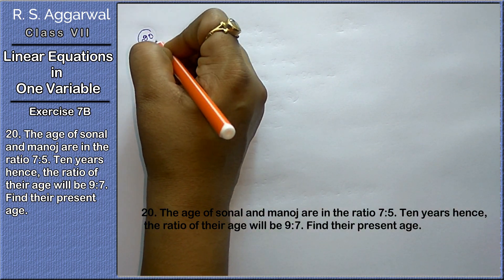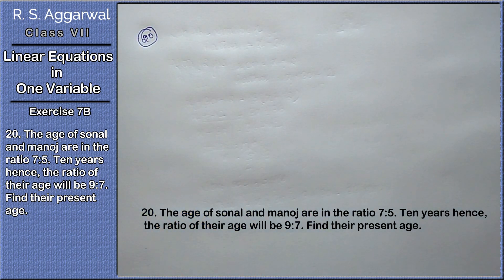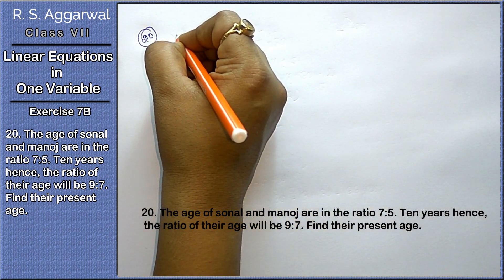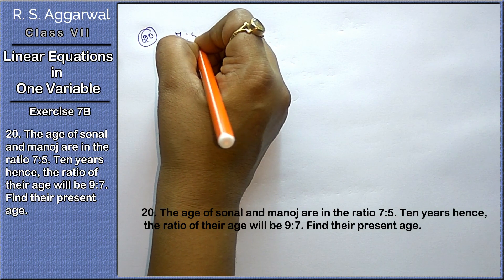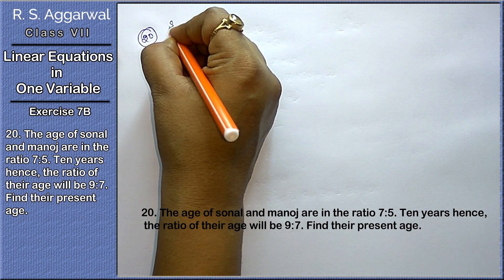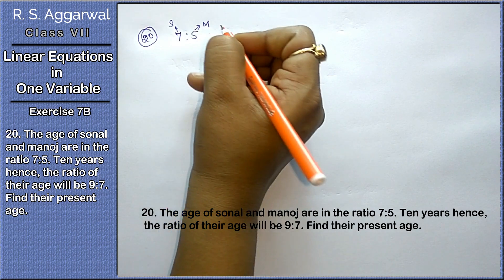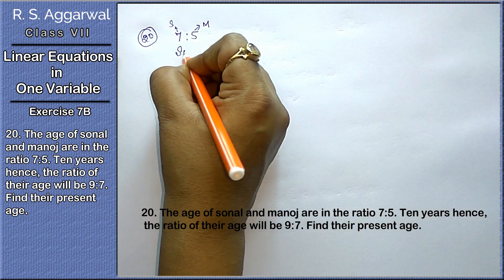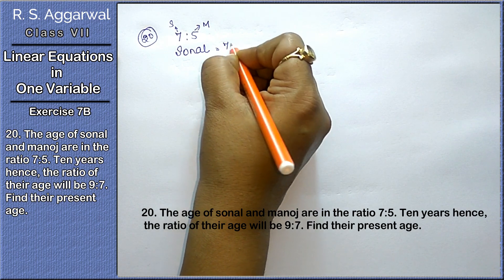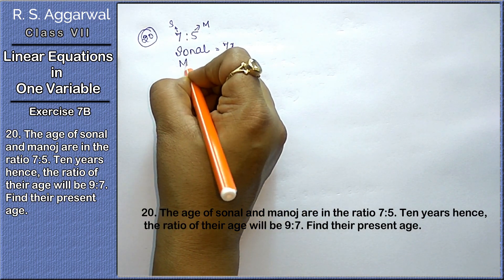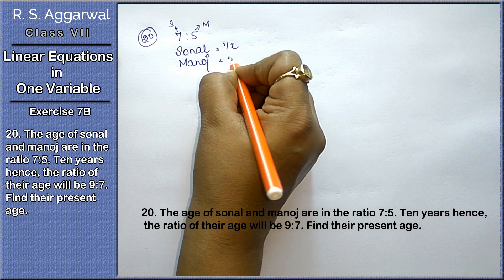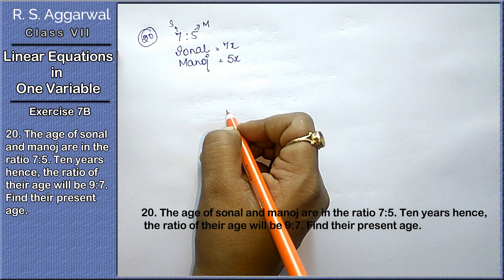Next question: The ages of Sonal and Manoj are in a ratio of 7 to 5. When ages are given in a ratio, Sonal's age will be 7x and Manoj's age will be 5x.